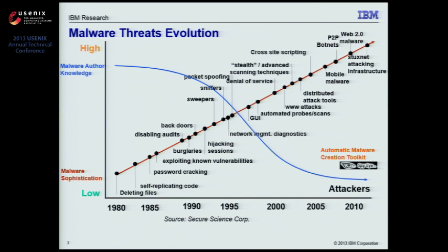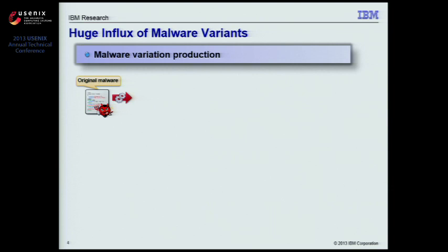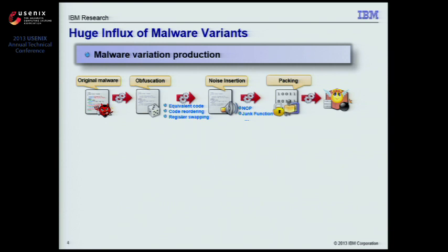In addition, malware polymorphism and obfuscation continue to drive up the number of malware variants. Because creating a new malware from scratch is difficult and time-consuming, most malware authors simply use a more cost-effective approach: taking existing malware and slightly altering them to evade antivirus detection.